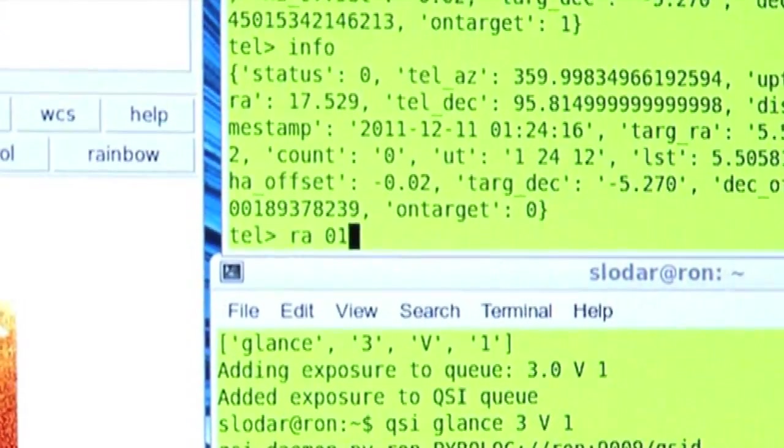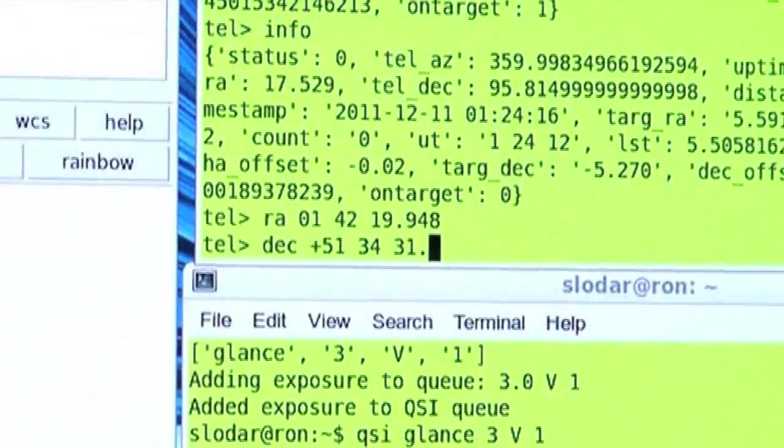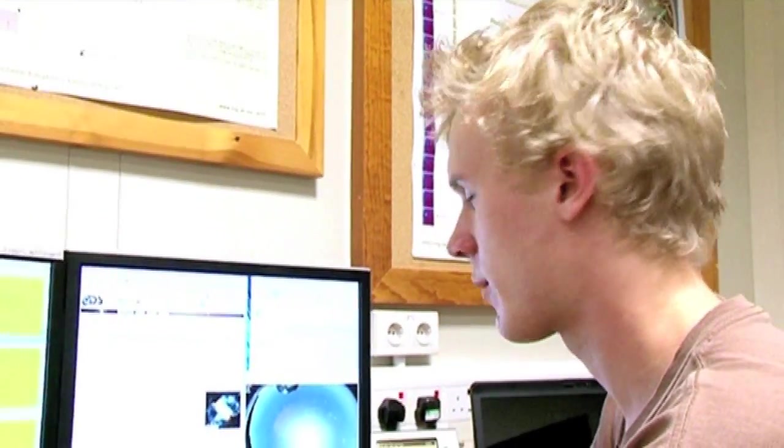Obviously everything in the sky changes throughout the night as the sky rotates, but these coordinates relative to the rest of the sky are always the same. It's kind of like the address of the object, if you like. And I made a mistake, so I'm having to try again.